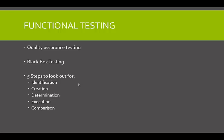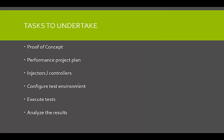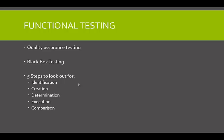Functional testing is much different than performance testing because performance testing was more about how the actual process of performance works. If I go back to this slide, you can see it's about the requirements and analysis, design, code, test, and deploy. In the test phase, you've got functionality testing, which we're looking at now, and you've got your performance, release, and production environment setup testing. So there are two totally different things, and normally two different entities would actually do the testing — not one entity.